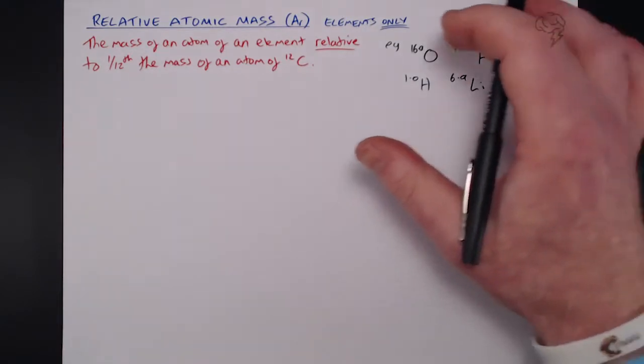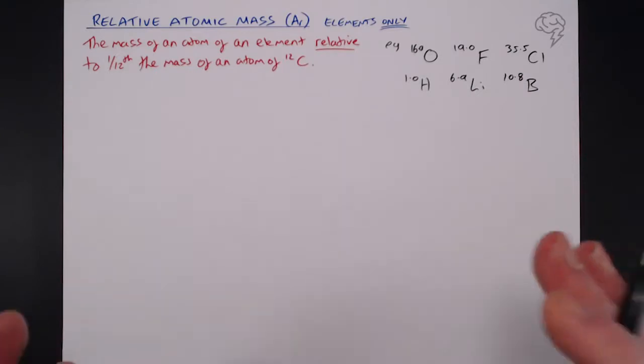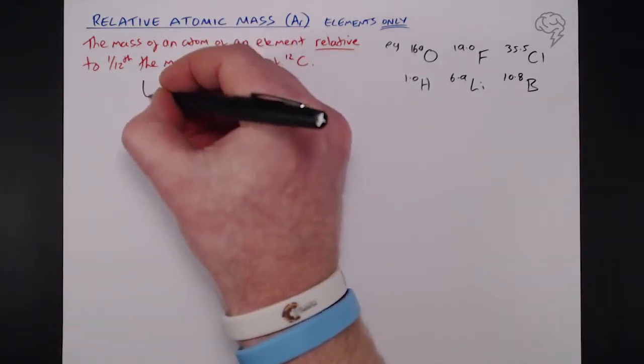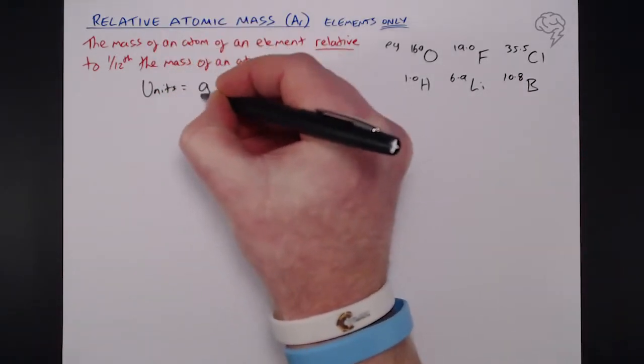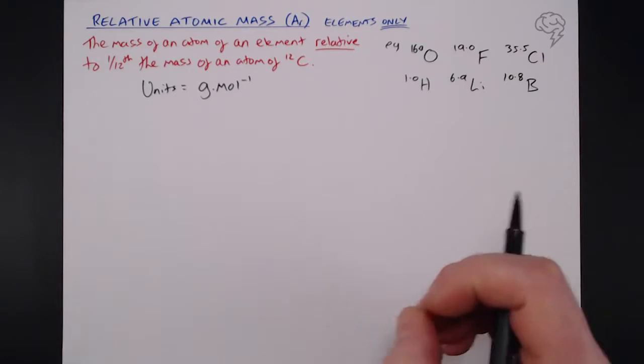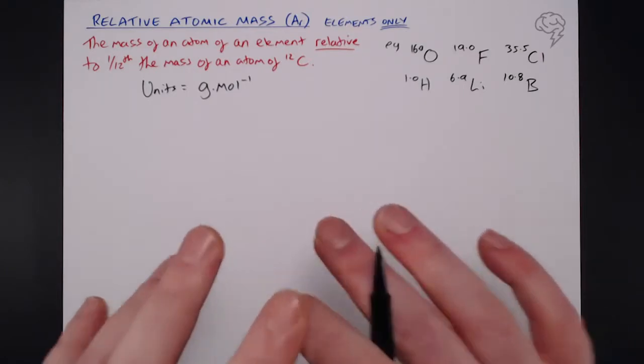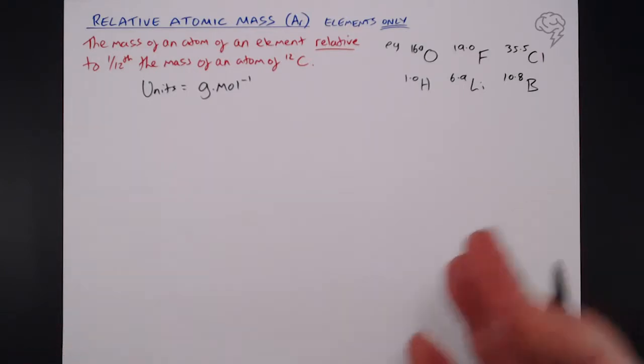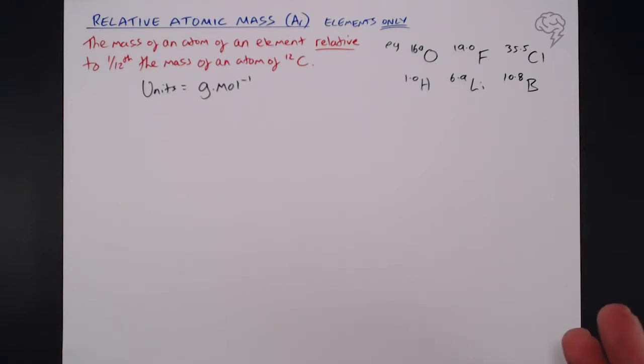Now, these numbers do have units. So there is a unit for relative atomic mass, and the units are grams per mole. Now, I did say that you can't measure the mass of an atom in grams. But if you have a mole of atoms, then it becomes more viable for that purpose.